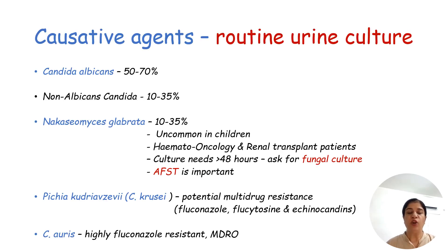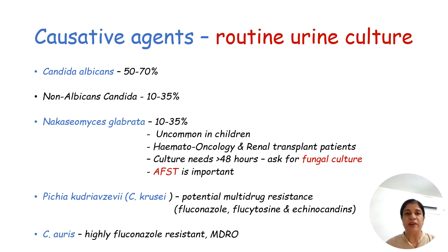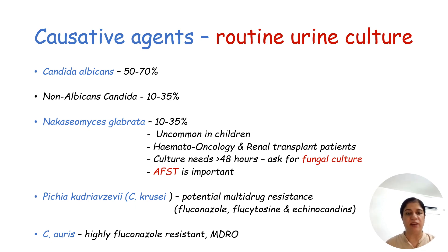The causative agents will grow on routine urine culture. The most common agent is Candida albicans, which is fortunately sensitive to fluconazole. Among non-albicans Candida, Candida glabrata — now called Nakaseomyces glabrata — is the second most important causative agent, though regional variation can occur.